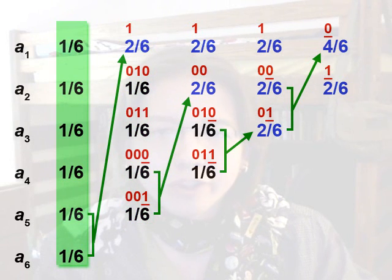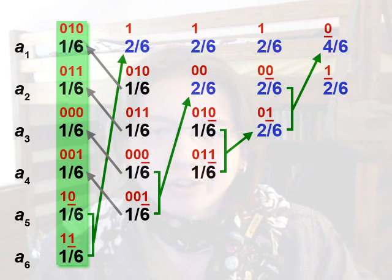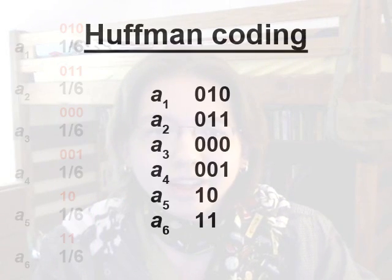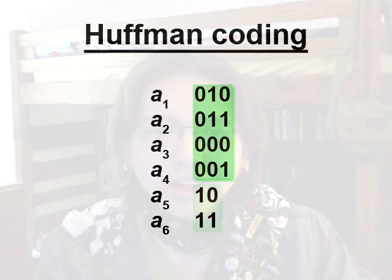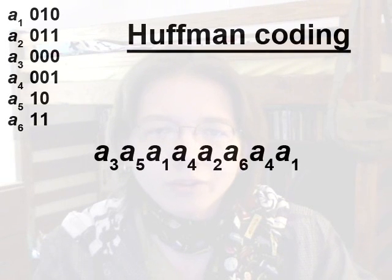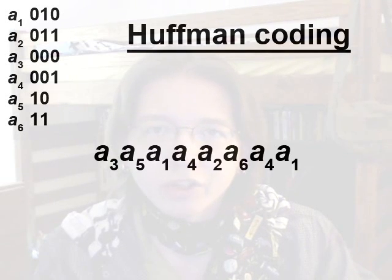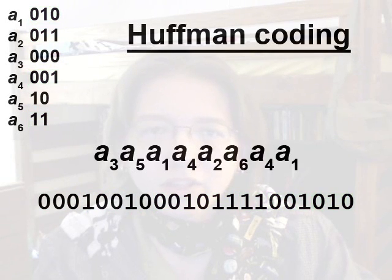Finally, we're all the way back to the first list we started with. The bottom-most 1 in 6 and 1 in 6 came from the 2 in 6 in the previous list, which had a number of 1, so these two will have numbers 10 and 11. Carrying over the numbers for everything else, we now have a code word for every symbol. Notice that 2 of the symbols have code words that are only 2 bits long, and the other 4 symbols have 3-bit code words. Using our original message of symbols 3, 5, 1, 4, 2, 6, 4, and 1, in the original code each used a 3-bit code word with 8 symbols, totaling 24 bits. Encoding with Huffman coding uses only 22 bits.